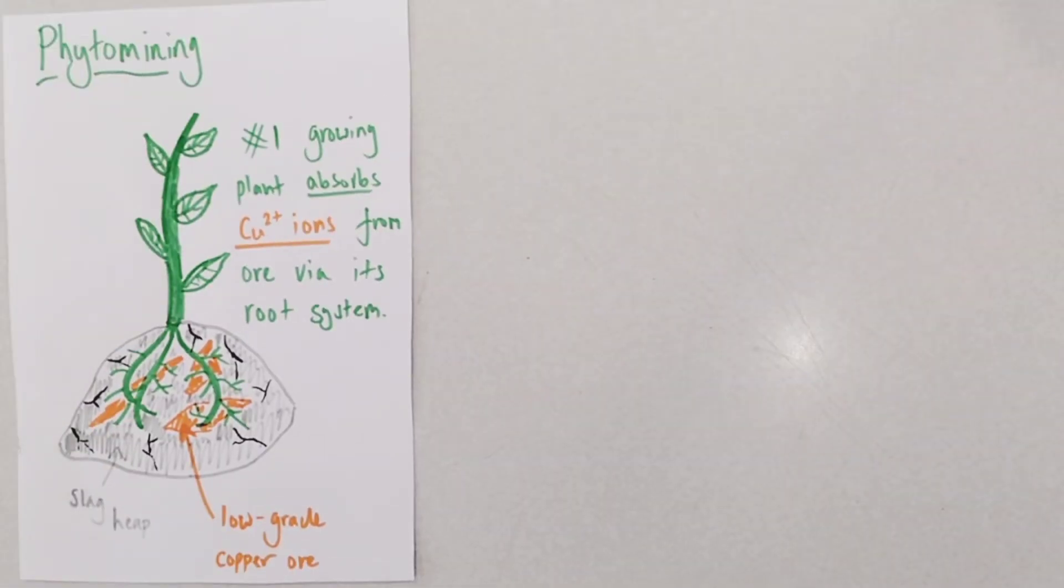Hopefully the word phyto is making you think of the term photosynthesis and therefore this process involves using plants. The idea is we grow plants on top of low-grade copper ore on a slag heap or maybe the soil around a mined area and the plants absorb copper ions from the ground or from the ore via their root systems.